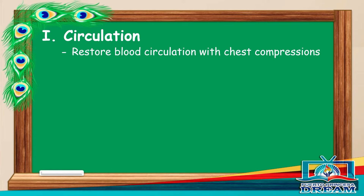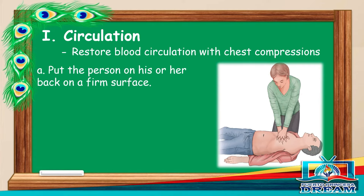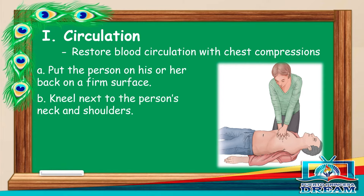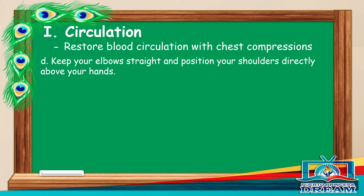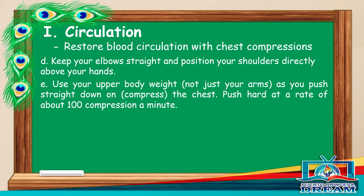Restore blood circulation with chest compressions. Put the person on his or her back on a firm surface. Kneel next to the person's neck and shoulders. Place the heel of one hand over the center of the person's chest and place your other hand on top of the first hand. Keep your elbows straight and position your shoulders directly above your hands. Use your upper body weight, not just your arms, as you push straight down on the chest. Push hard at a rate of about 100 compressions a minute.